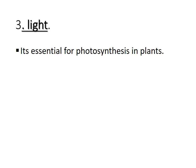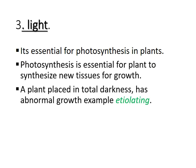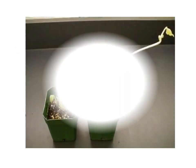We know that light is essential for photosynthesis in a plant, which is the process that a plant uses to synthesize food. That food provides energy for the synthesis of tissue, which supports the growth of a plant. A plant placed in total darkness has abnormal growth because it has not received enough light. This is called etiolation.